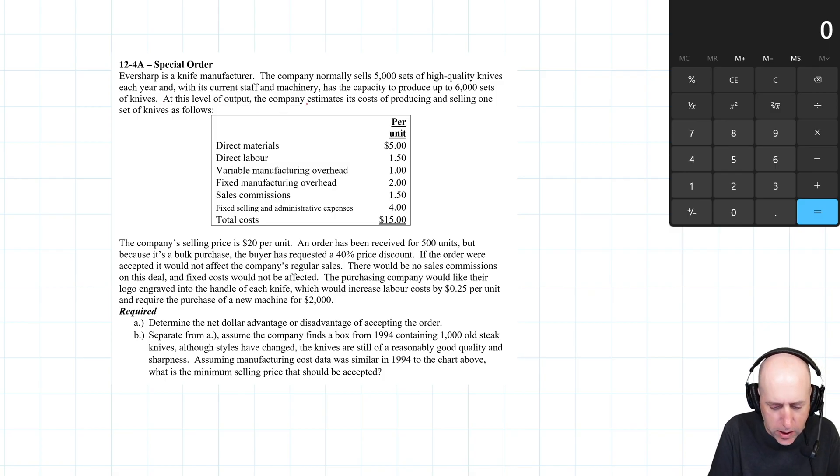At this level of output, the company estimates its cost producing and selling one set of knives as follows. So our costs are $15. And it says the selling price is $20 a unit. So we're making $5 per knife set. And these are not expensive knives. An order has been received for 500 units. That's like 10% of our capacity. So that's a big order. But because it's a bulk purchase, the buyer has requested a 40% price discount. Let's just do the math on that. 20 times 40%. That's an $8 discount. So if we're selling for 20 and we're taking $8 off, they're asking for us to sell it to them for $12. Well, it costs us $15. But are all these costs relevant? Well, time will tell. Let's read on.